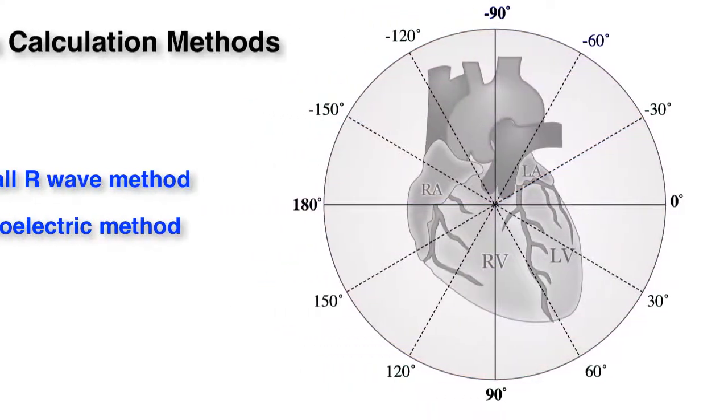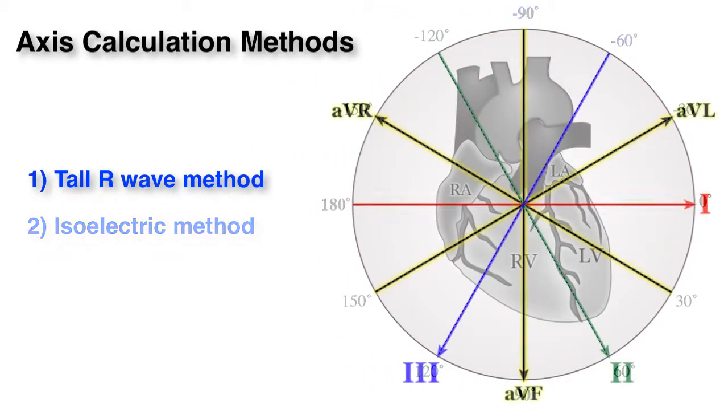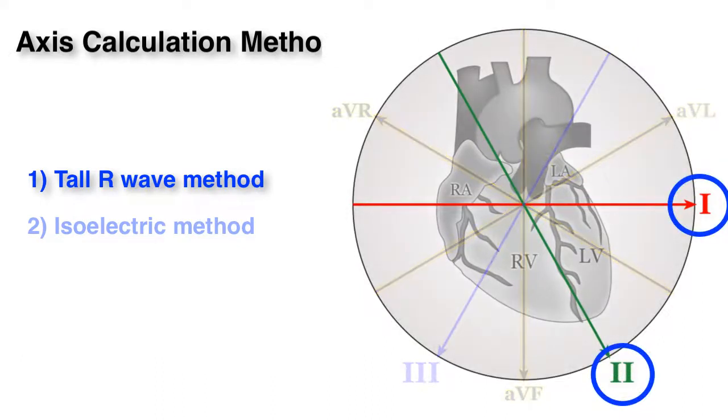Here are two methods to properly calculate the axis. First, the tall R-wave method. Identify the two leads in which the R-waves are tallest and of equal height. The mean QRS axis will be directed between both.